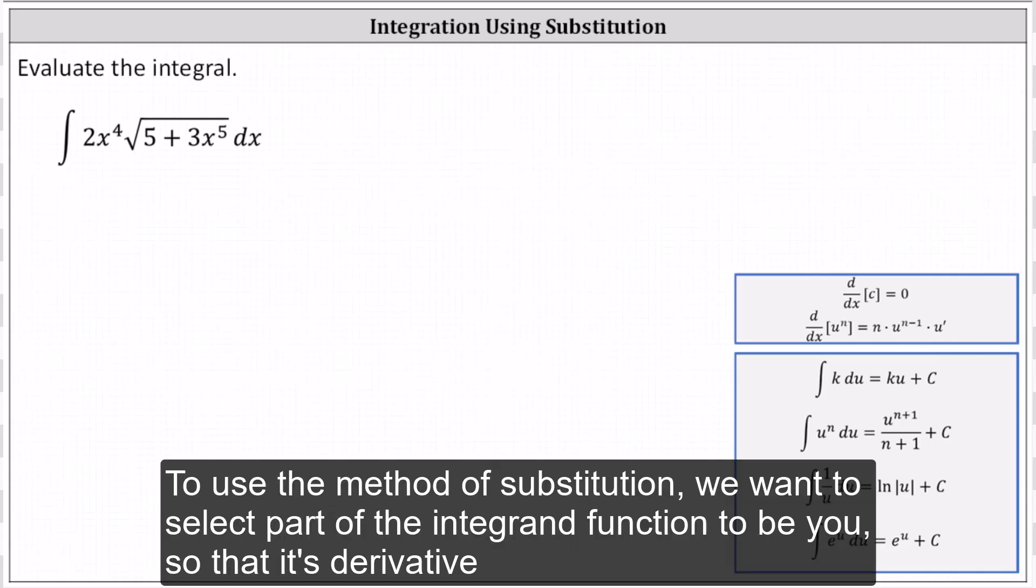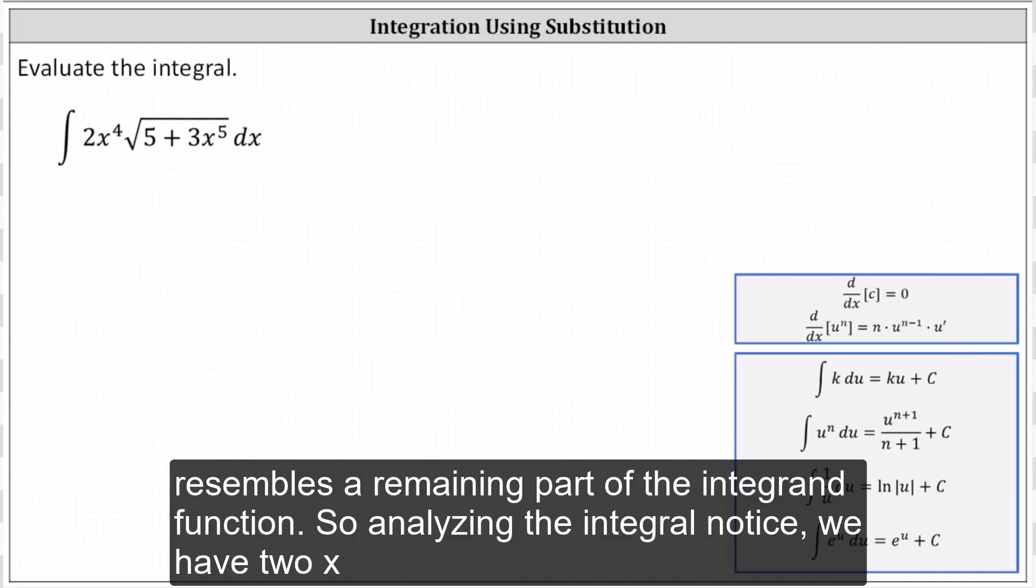To use the method of substitution, we want to select part of the integrand function to be u so that its derivative resembles a remaining part of the integrand function.